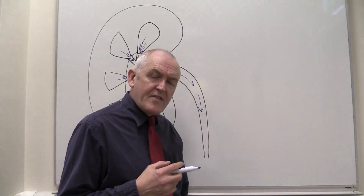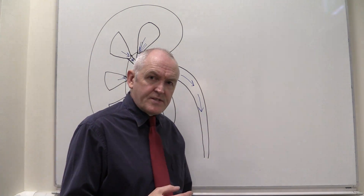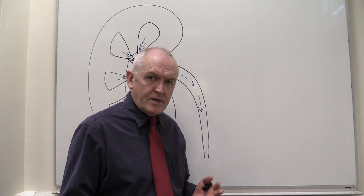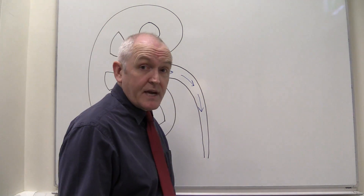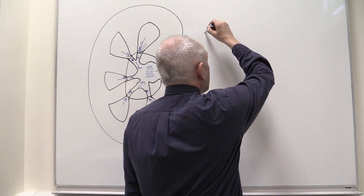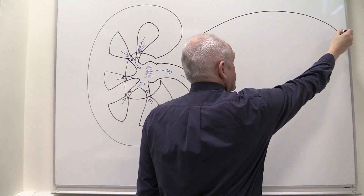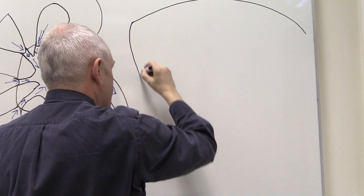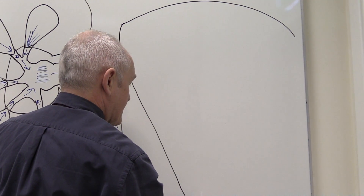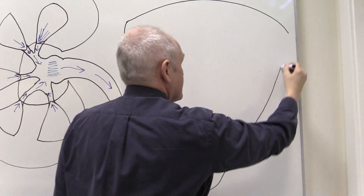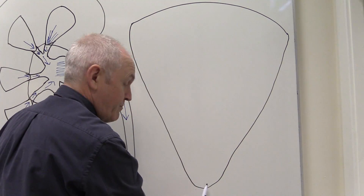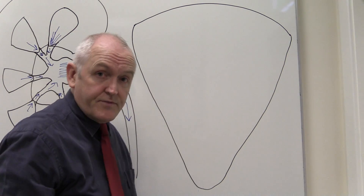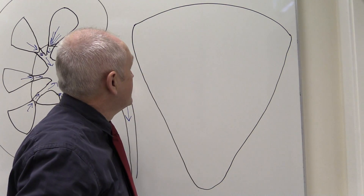Let's now consider where the nephrons fit into this macroscopic renal structure. Let's imagine we have a renal pyramid here. This is the base of the pyramid at the top going down to the apex, with the papilla at the bottom. This is an enlarged version of one of the medullary pyramids.